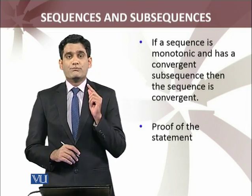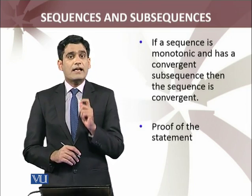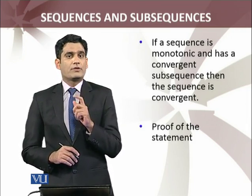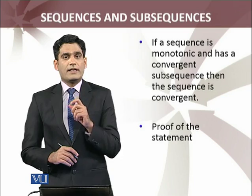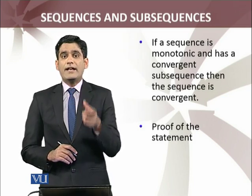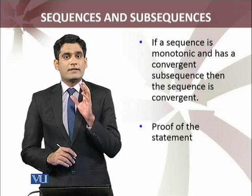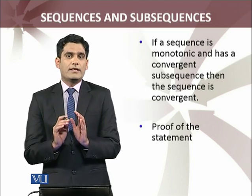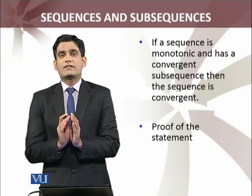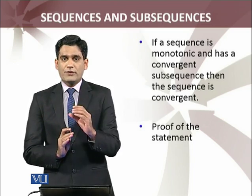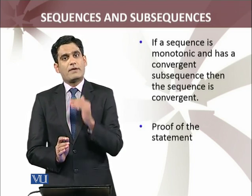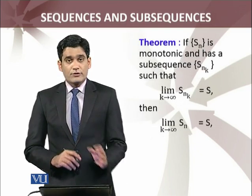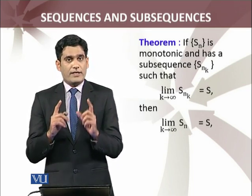If a sequence is monotonic and has a convergent subsequence, then the sequence is convergent. You may recall that for monotonic and bounded sequences, we concluded convergence. This statement is slightly different because we now involve subsequences. This states that a monotonic sequence with a convergent subsequence will itself be convergent.